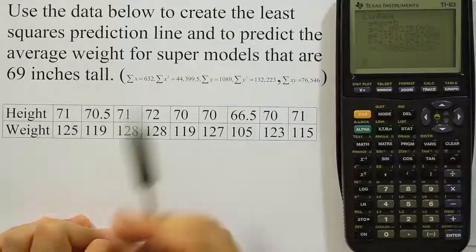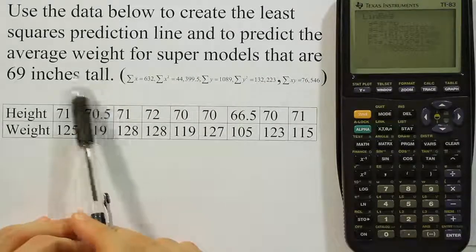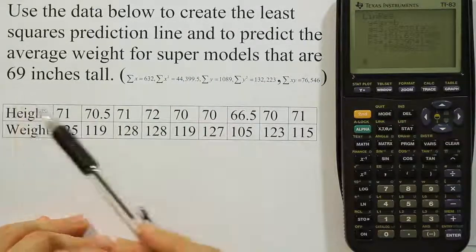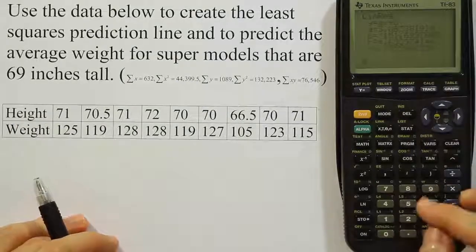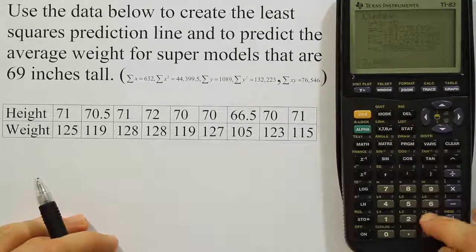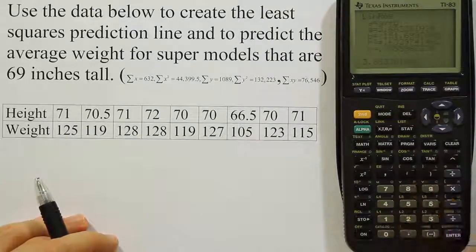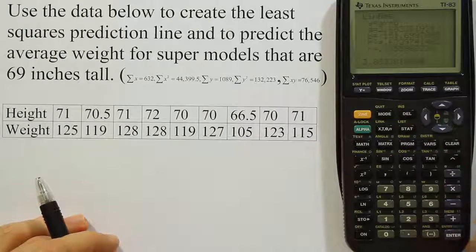And if we want to do what it asks us here at the end, which is to make a prediction for someone who's 69 inches tall, we just enter 69 in for x. So we can just type in our calculator the A term, which is 3.88338192. So I put the whole thing in there times the x value.